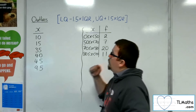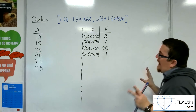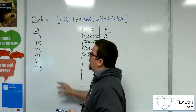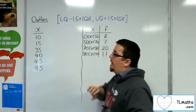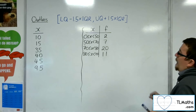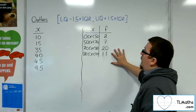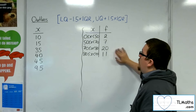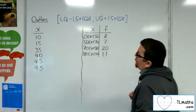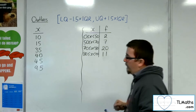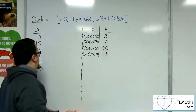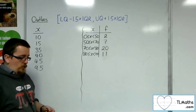I'm going to work out if there are any outliers for these two sets of data. The first set is a discrete set of data, and the second set is a grouped continuous set of data. For the first set, I need the lower quartile, upper quartile, and interquartile range.